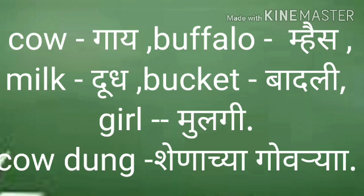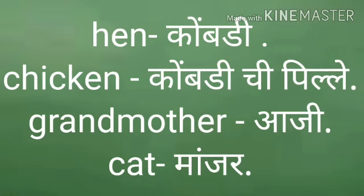Now look at the last part of the picture and identify the words: hen — koabdi (chicken), cat — manjara (cat).